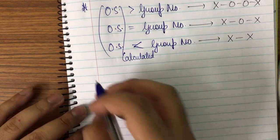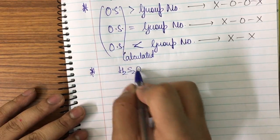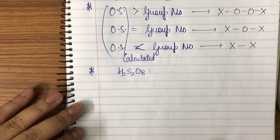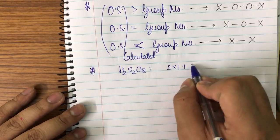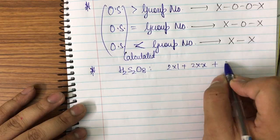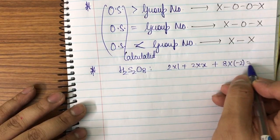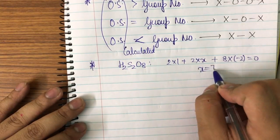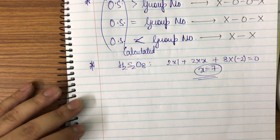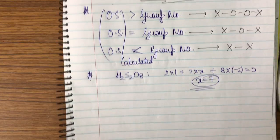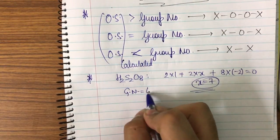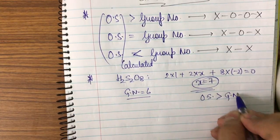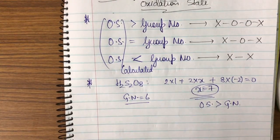Let me take a simple example: H₂S₂O₈. I will calculate the oxidation state of sulfur. So: 2×(+1) + 2x + 8×(−2) = 0, which gives x = +7. The group number of sulfur is 6. So oxidation state (7) is greater than the group number (6), which is the first case.